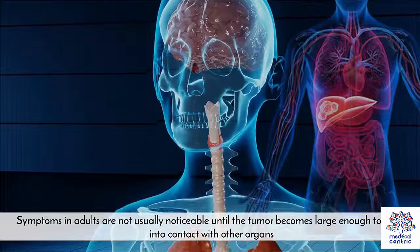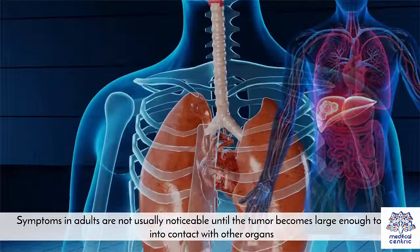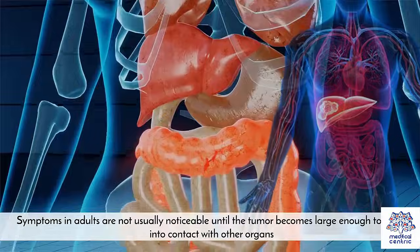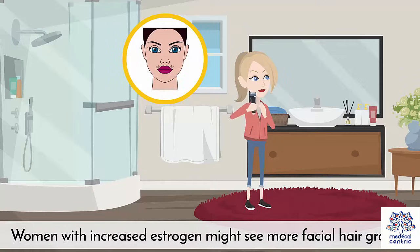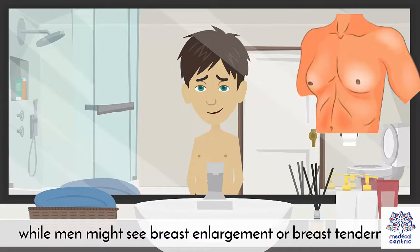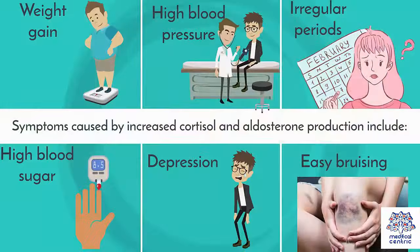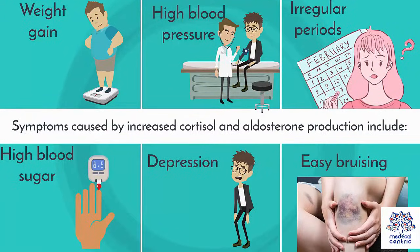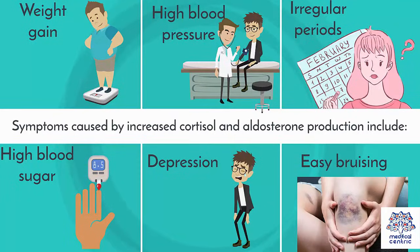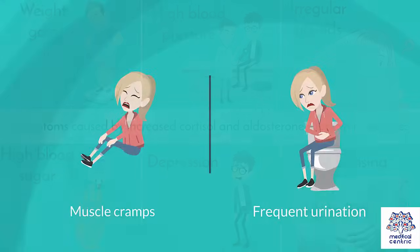Symptoms in adults are not usually noticeable until the tumor becomes large enough to come into contact with other organs. Women with increased estrogen might see more facial hair growth, while men might see breast enlargement or breast tenderness. Symptoms caused by increased cortisol and aldosterone production include: weight gain, high blood pressure, irregular periods, high blood sugar, depression, easy bruising, muscle cramps, and frequent urination.